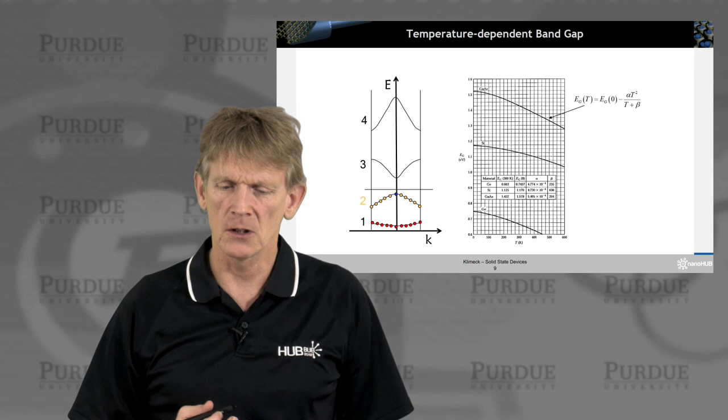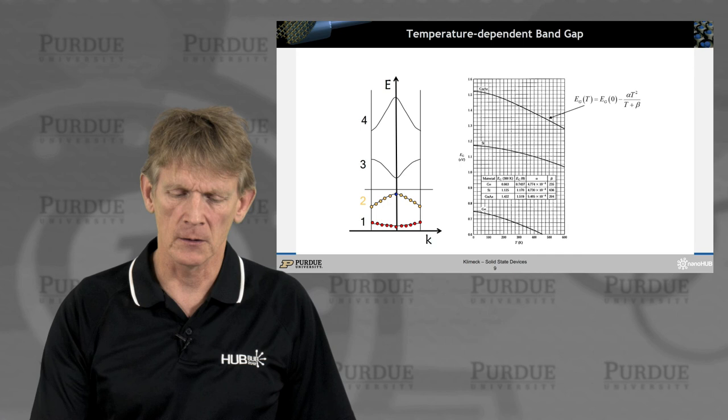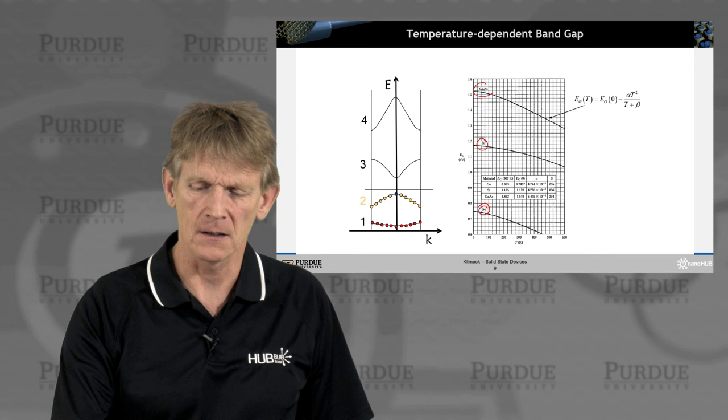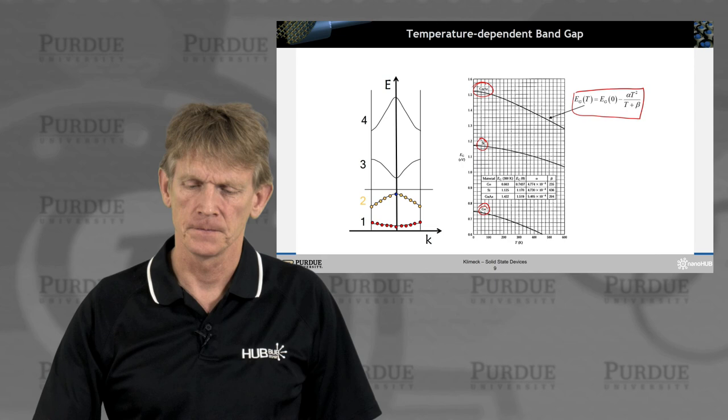But nevertheless, you can do measurements of the band gap, and here is a traditional example of a band gap measurement for the typical material germanium, has the lowest band gap in the class of three, then there's silicon, and then there's gallium arsenide, and you can fit those to certain temperature dependencies, as indicated here. So a band gap is temperature dependent.